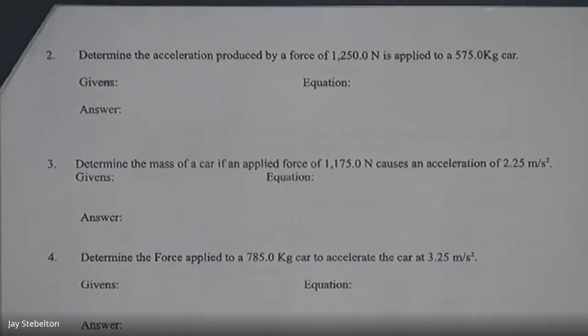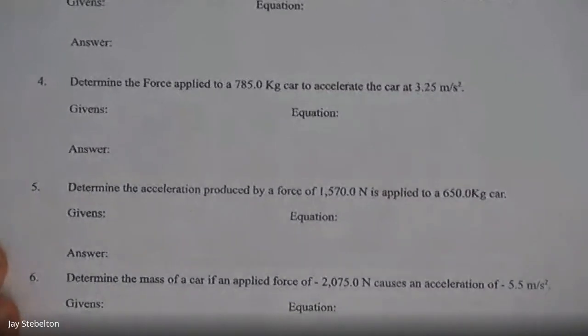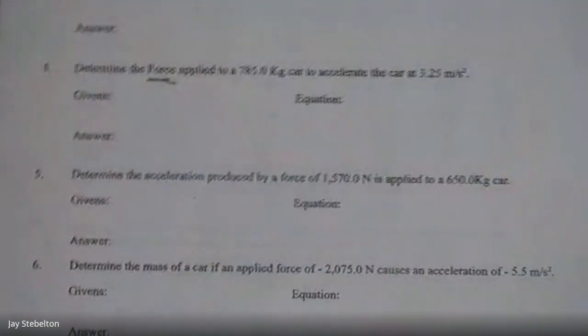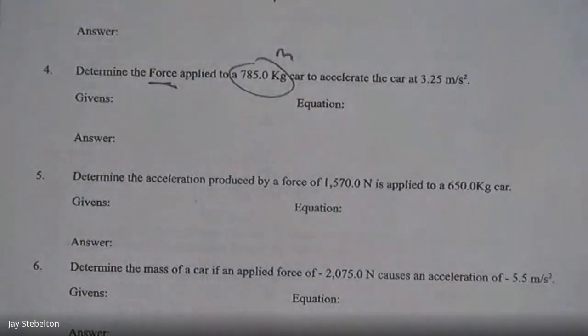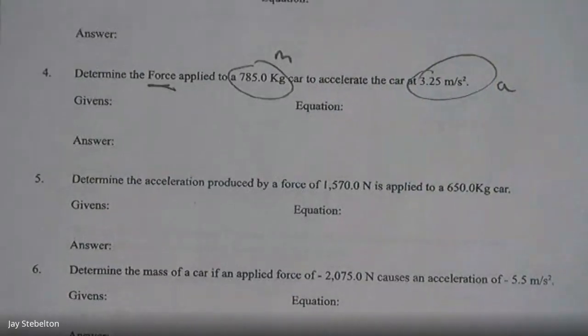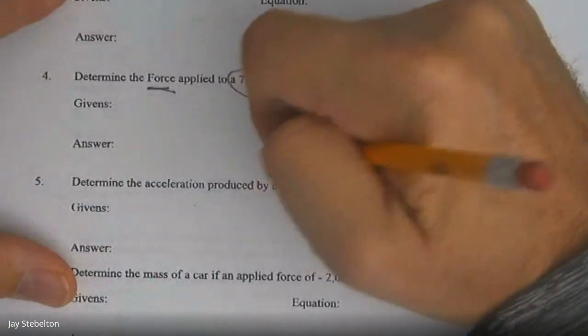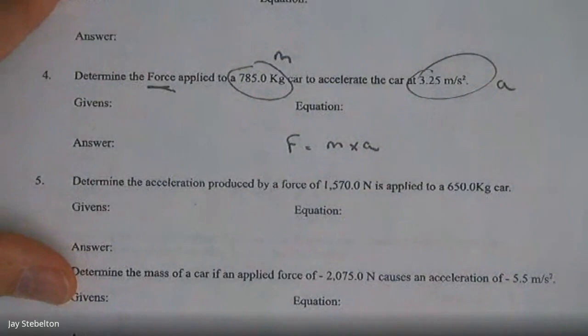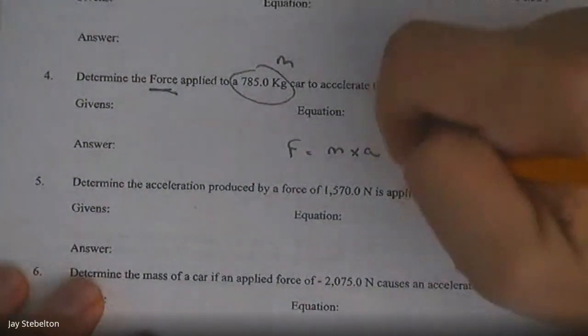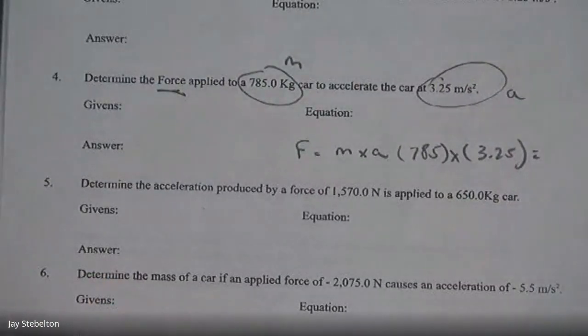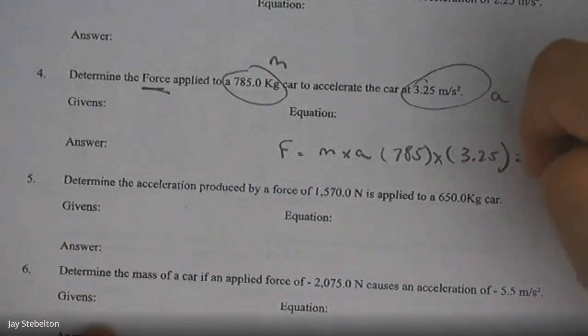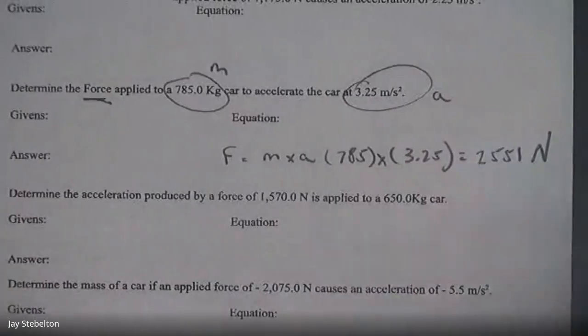I think if you pin this right now, it should show up just on your screen. And then just to review, remember we are using, I'll actually start with number four, because that's the formula we start with. We're using the force formula. So determine the force applied to a 785 kilogram car, that's your mass, that accelerates at 3.25 meters per second squared, that's your acceleration. So remember the equation we were using, force equals ma, or force equals m times a. And then when you plug those in, and multiply them, you should get 2551. And the unit is newtons, 2551 newtons.